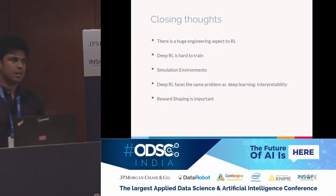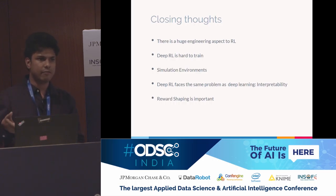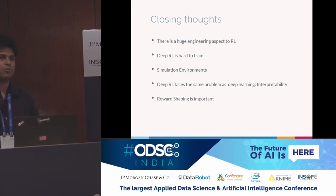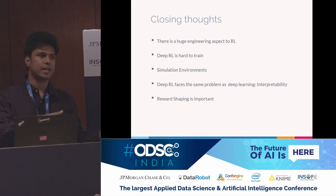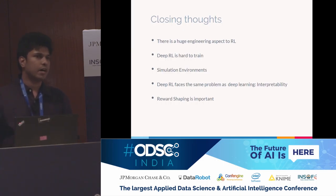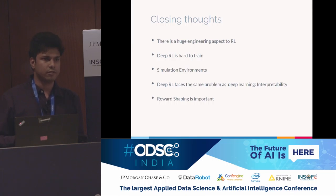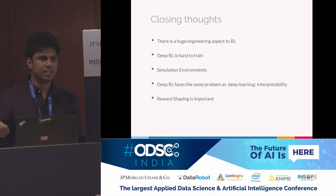Simulation environments: imagine training a self-driving car using RL — you can't really give a negative reward when the car crashes, so it's better to train the algorithm on a simulated environment. When the agent is performing well enough, transfer that knowledge to the real world. Deep RL suffers from the same problem as model interpretability — since it uses deep learning, it's a black box. You know it's working well but you don't know why. Reward shaping is very important: how you set the reward determines what policy the agent will learn, and that has to be done very carefully.